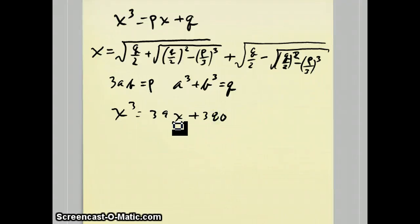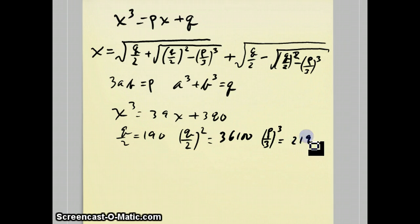This works best when the coefficient on the x is divisible by 3 and when the constant is divisible by 2. So the main things are that q over 2 is 190, q over 2 squared is 36,100, and p over 3 cubed, which is 13 cubed, is 2,197.